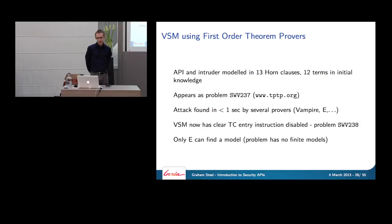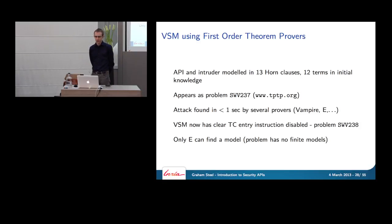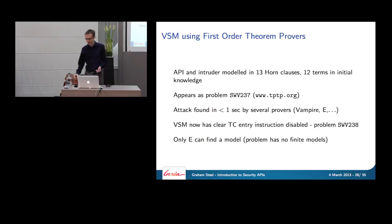We can write down the intruder model and API model in 13 Horn clauses, giving the attacker 12 terms in his initial knowledge. Every year in the automated reasoning community there is a competition for theorem provers, with a corpus of problems called the TPTP — Thousands of Problems for Theorem Provers. This problem is in the TPTP (problem SWV237), and pretty much all state-of-the-art provers can find the attack in less than a second.